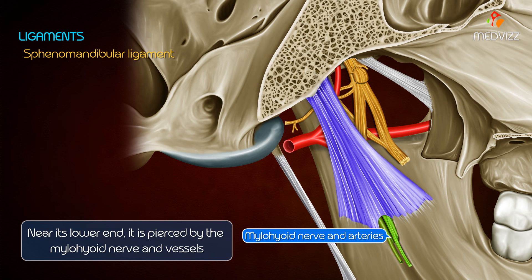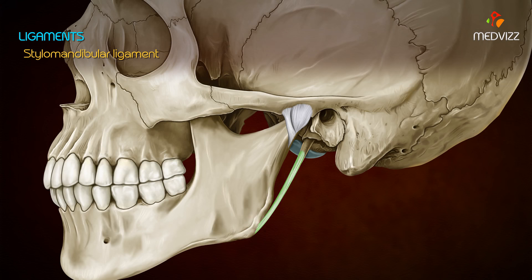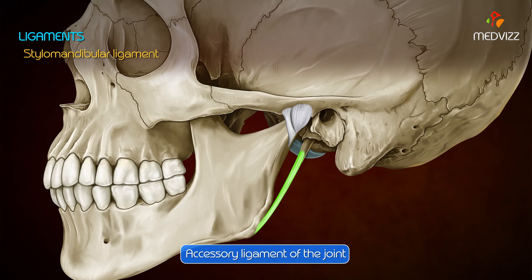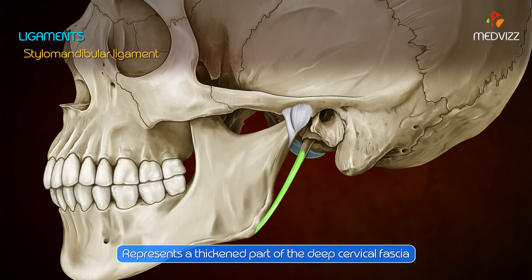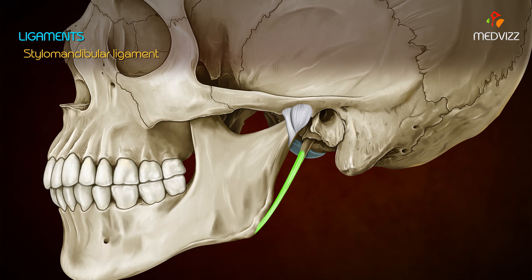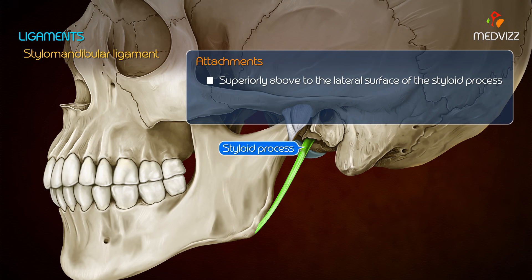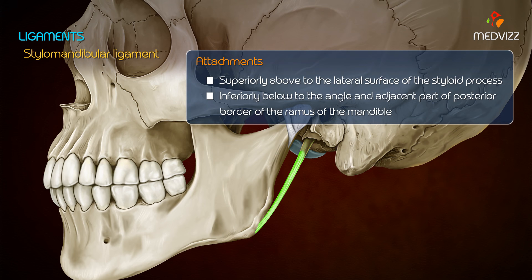The spinomandibular ligament is related medially to the chorda tympani nerve and the wall of the pharynx near its lower end; it is pierced by the mylohyoid nerve and its vessels. The stylomandibular ligament is another accessory ligament represented by a thickened part of the deep cervical fascia, which separates the parotid and submandibular salivary glands. It is attached above to the lateral surface of the styloid process and below to the angle and adjacent posterior border of the mandible.